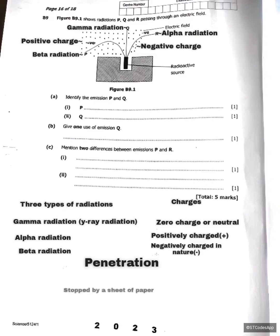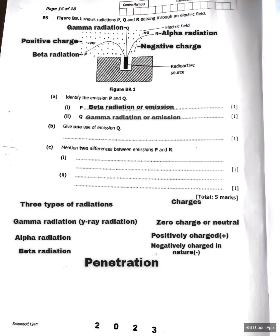Question A asks to identify emissions P and Q. P is the beta particle because beta radiation is negatively charged, causing attraction toward the positive charges. Q travels in a straight line, so Q is the gamma radiation or gamma emission. P is the beta emission and Q is the gamma emission.